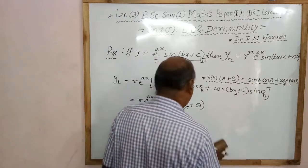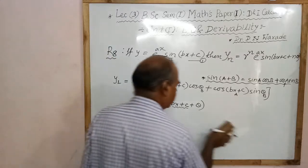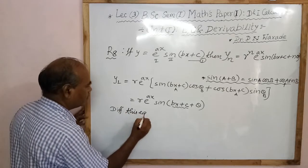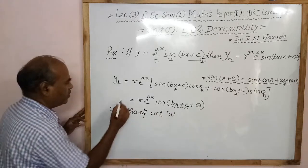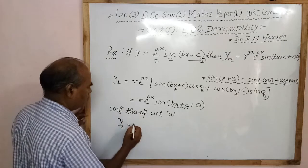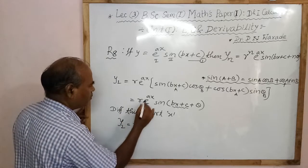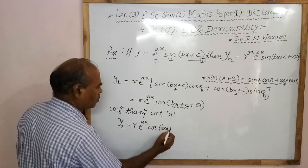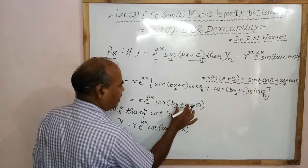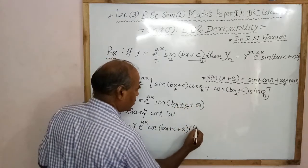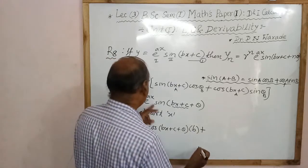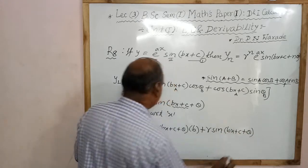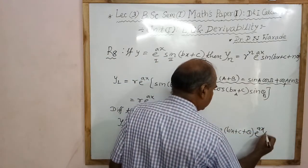Substituting A equal to R cos theta and B equal to R sin theta in this equation, and differentiating with respect to x, we get the second derivative y2. R is constant; applying product rule: first function into derivative of second, which is e to the power x into the derivative of sine giving cos of bx plus c plus theta, times derivative of internal function b.